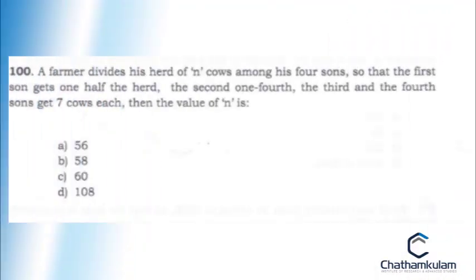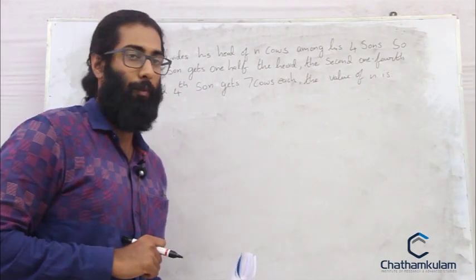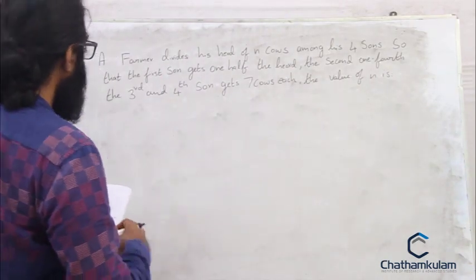A farmer divides his herd of n cows among his four sons so that the first son gets one half of the herd, the second one gets one fourth, and the third and fourth sons get four cows each. What is the value of n?